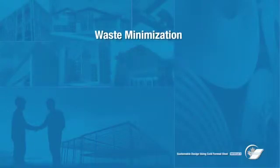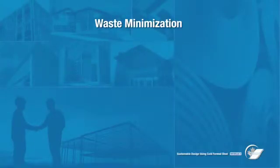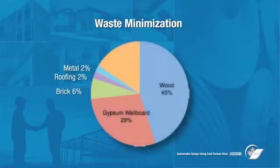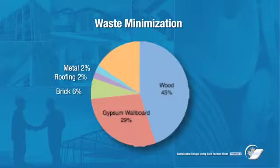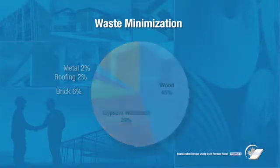The use of steel structures and other steel components contributes significantly to reducing waste on site. As evident in this chart, metals in general account for a very small proportion of on-site waste. Moreover, CFS components are generally manufactured to tight factory tolerances, which minimizes waste, and any steel offcuts that do occur can easily be recycled.